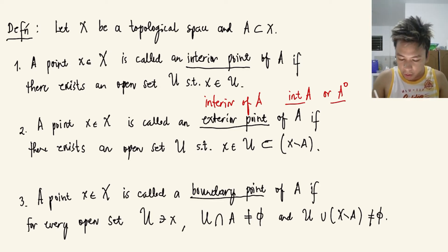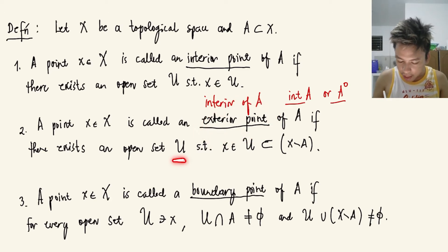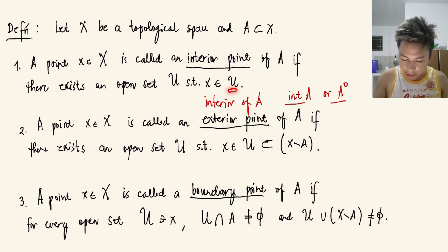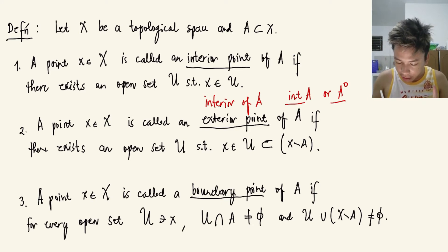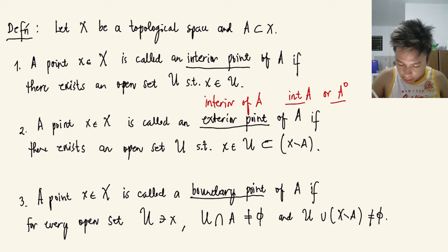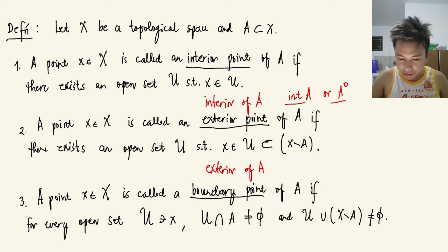A point x is called an exterior point of A if there exists an open set U such that U is a subset of X minus A. Notice the difference: for an interior point, U just needs to contain x; for an exterior point, U must lie entirely within X minus A. The collection of all exterior points is called the exterior of A, denoted accordingly.